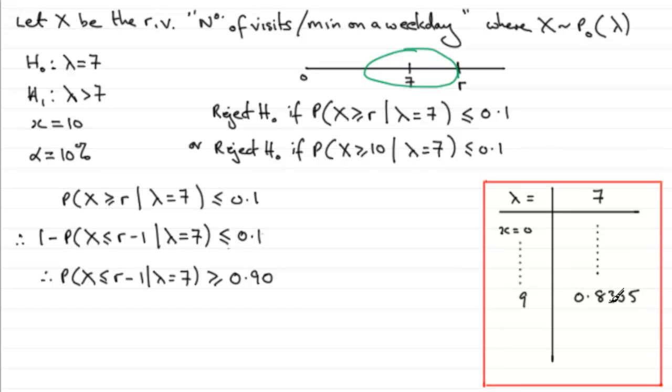Now 9, we saw previously, was 0.8305, so that's going to be no good to us. Because if you look under 10, you'll see that you've got 0.9015. And if you look under 11, you've got 0.9467.